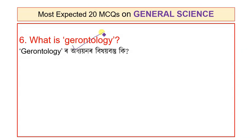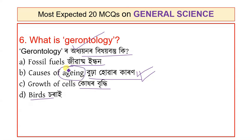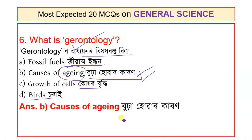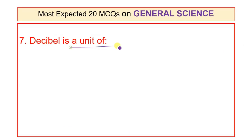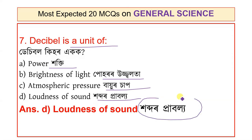Question 6: What is Gerontology? Gerontology is the study of old age and aging. Question 7: Decibel is a unit of — options: Power, Brightness of light, Atmospheric pressure, Loudness of sound. The answer is Loudness of sound. Decibel is the unit used to measure loudness of sound.